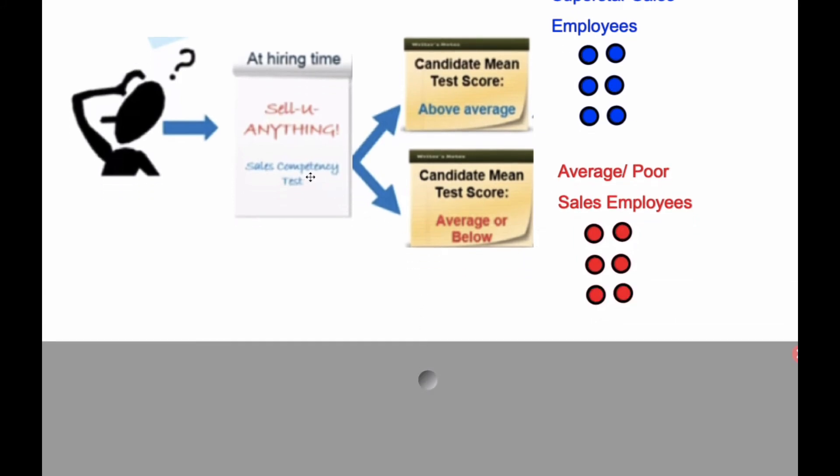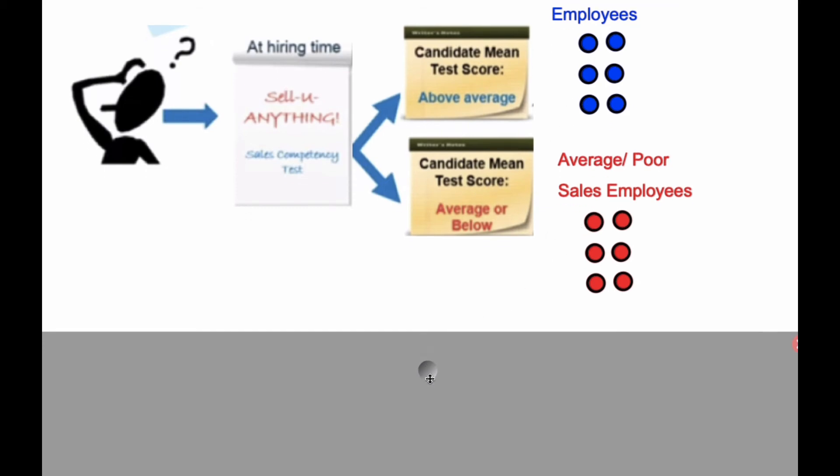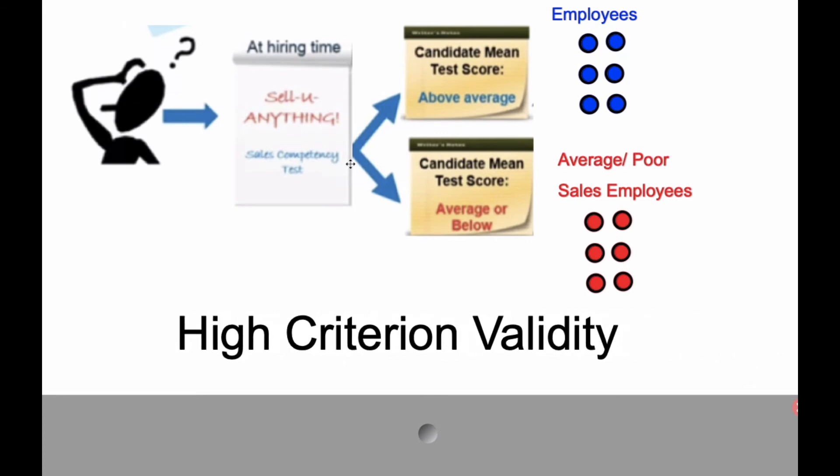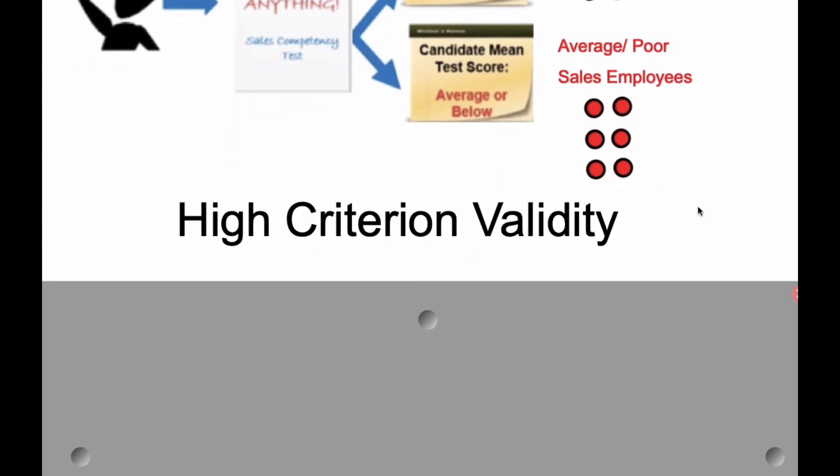If the test produces, if they do well and they get superstar, and they are shown a year later that they are the superstar employees, and they've shown that they're poor employees, then you can say that there is high criterion validity on this test, because this test predicted accurately what these employees were going to be.